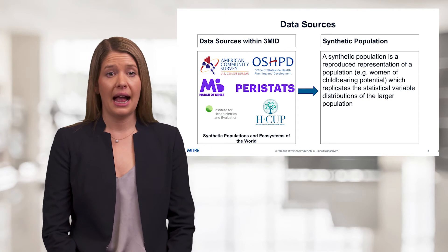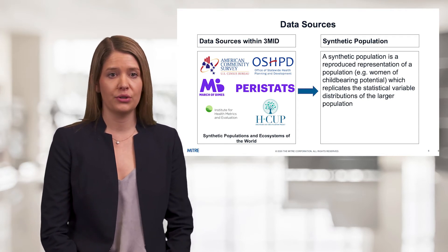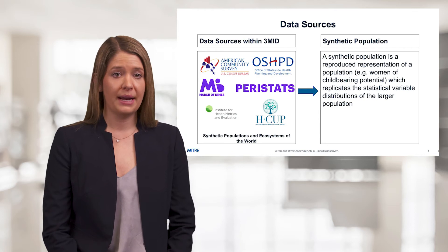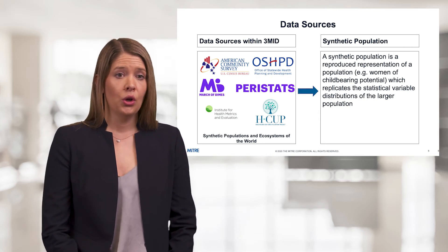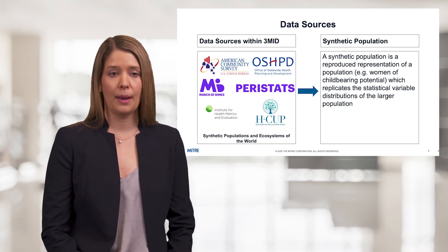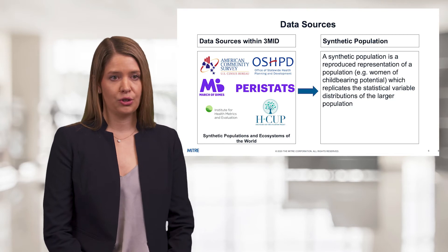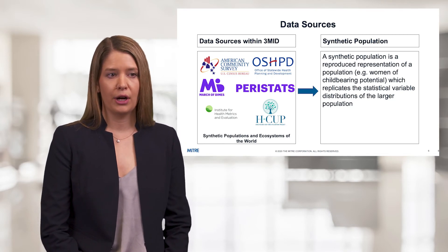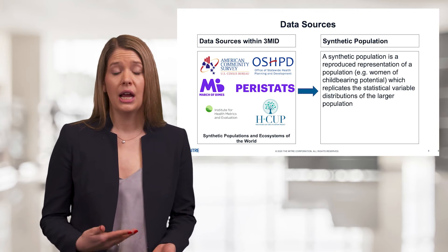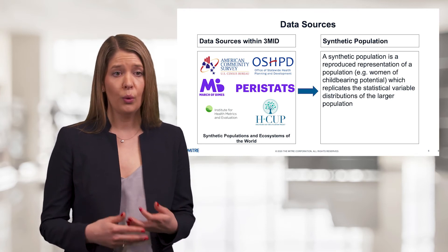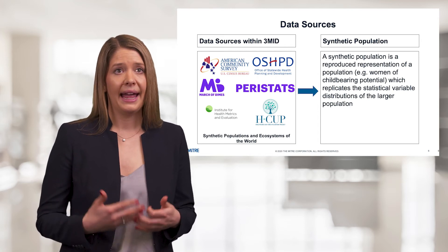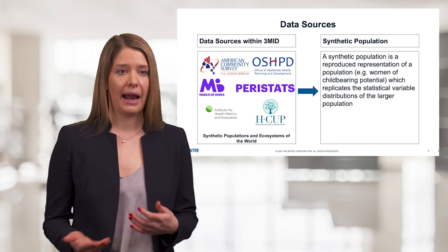For the last two years, my MITRE research team and I have been collating all available data resources related to maternal mortality. We've been sorting through these different data quality issues to find the best data sources to best understand the current state of maternal mortality in the US. By collecting these data sources, we created a synthetic population — a reproduced representation of a population — in this case, women of childbearing ages between 14 and 44 years of age. We hope to replicate the statistical variable distributions of a larger population. A synthetic population is important to use here because there are only around a thousand women per year in the US that suffer from pregnancy-related deaths, and with such a small number there are privacy concerns with identifying these women. By using a synthetic population, we're able to analyze and study the factors that surround these women without worrying about privacy concerns.